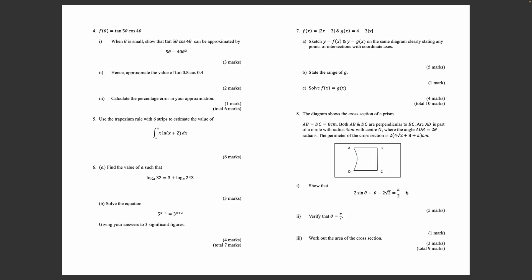Question 7: f(x) = |2x - 3| and g(x) = 4 - 3|x|. Sketch y = f(x) and y = g(x) on the same diagram, stating any points of intersection with the coordinate axes. State the range of g. Part c: Solve f(x) = g(x).